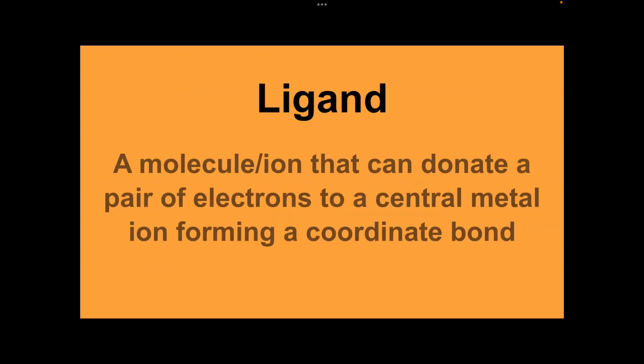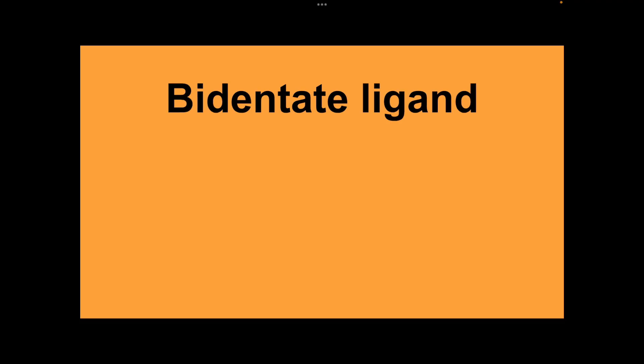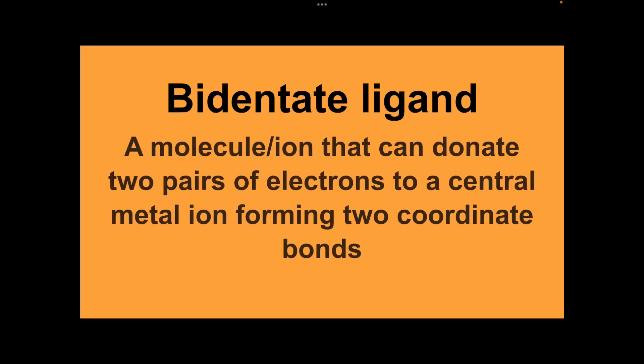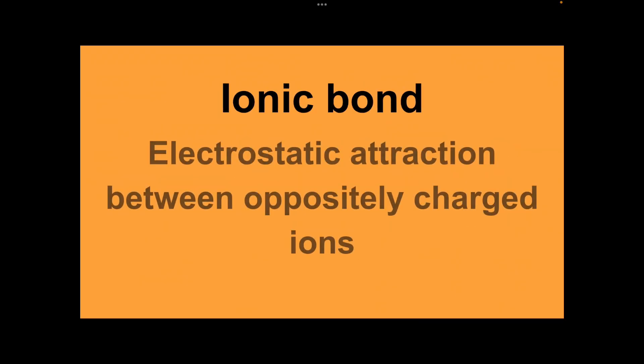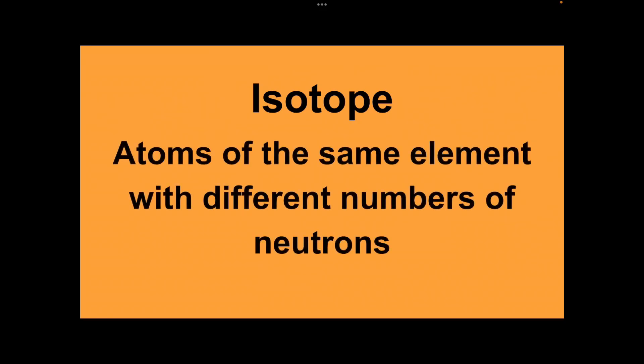Ligand: a molecular ion that can donate a pair of electrons to a central metal ion forming a coordinate bond. Bidentate ligand: a molecular ion that can donate two pairs of electrons to a central metal ion forming two coordinate bonds. Ionic bond: the electrostatic attraction between oppositely charged ions. Isotope: atoms of the same element with different numbers of neutrons.